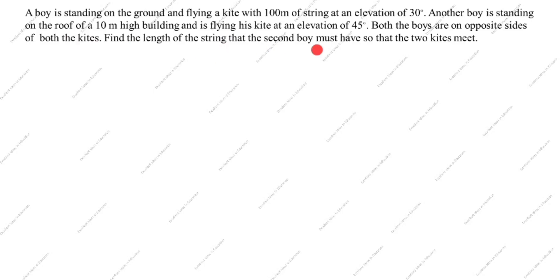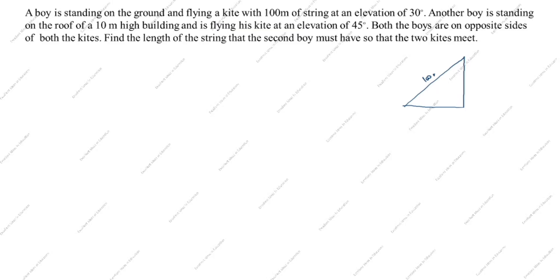We need to find the length of string the second boy must have so that the two kites meet. We will draw the diagram. Both boys are on opposite sides, so we draw the line. The first boy is standing on the ground at an elevation of 30 degrees. This line is the string, and this length is 100 meters. This angle is 30 degrees.